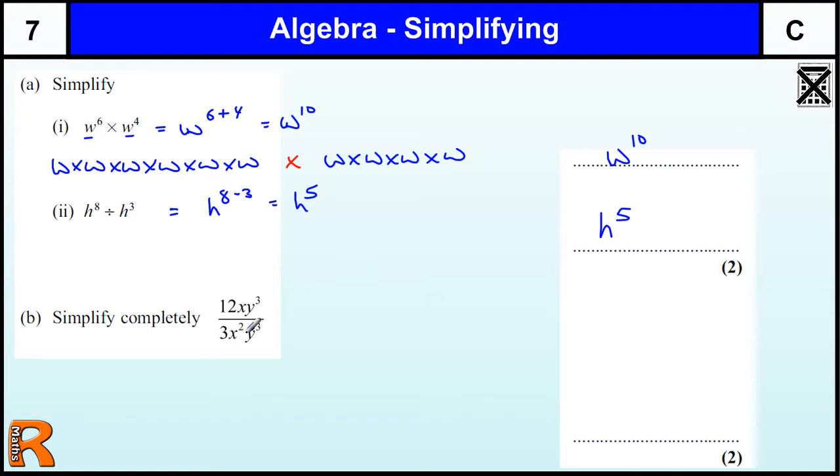Simplifying this statement, there are no pluses and minuses in here, so it's all multiplication divided by multiplication. To start with, I would look at the numbers: 12 divided by 3 is 4.